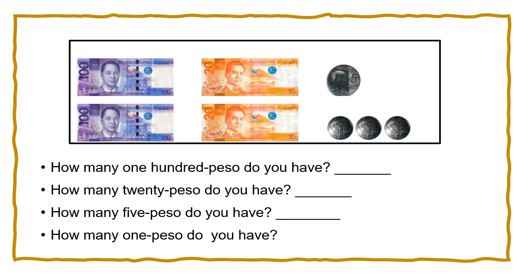Let's study this example. How many 100-peso bills do you have? We have two 100-peso bills. How many 20-peso bills do you have? We have two 20-peso bills. How many 5-peso coins do you have? We only have one 5-peso. How many 1-peso coins do you have? We have three 1-peso coins. Now, how much do we have in all? If we put together all these bills and coins, we get 248 pesos.